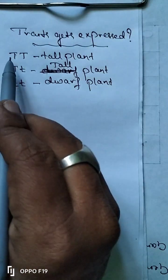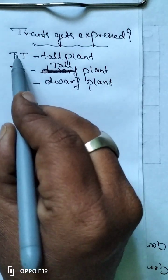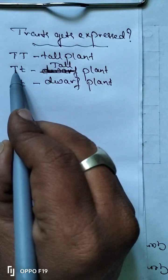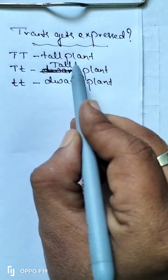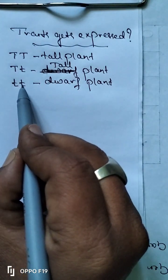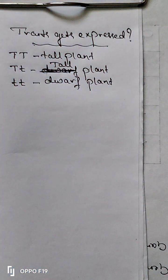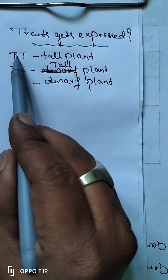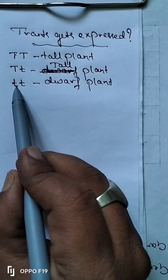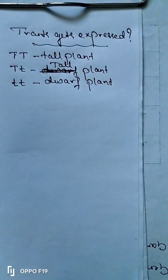So, if both the alleles are capital T, the plant grows as a tall plant. If one is capital T and another one is small t, the plant again grows as a tall plant. If both the alleles are small t, then the plant grows as a dwarf plant. That means tallness is the dominant and dwarfness is the recessive character. Capital T is dominant and small t is recessive.